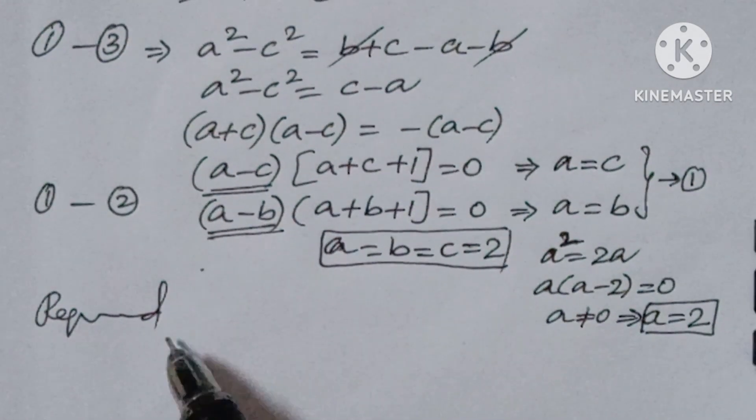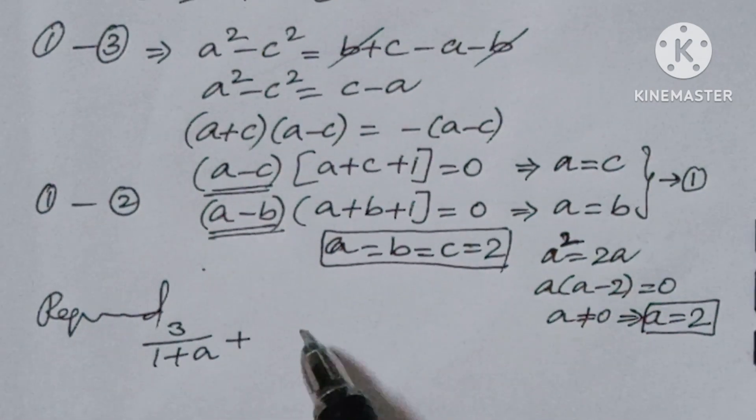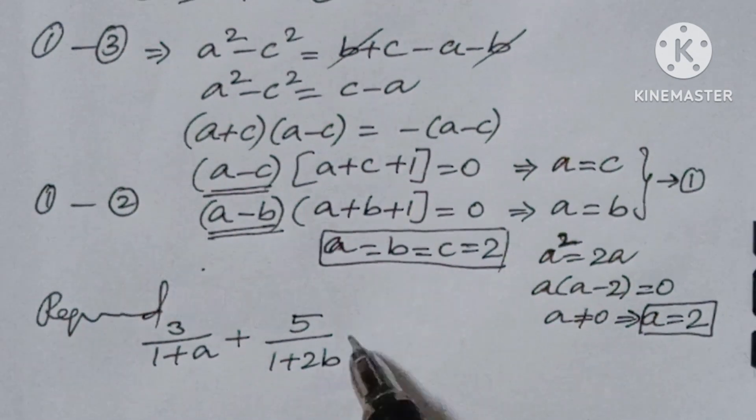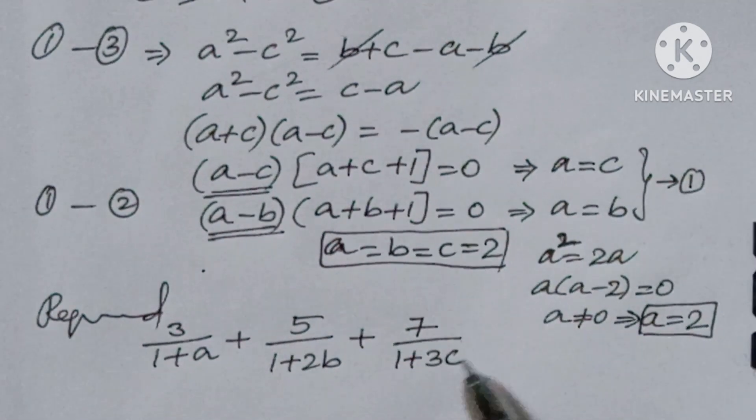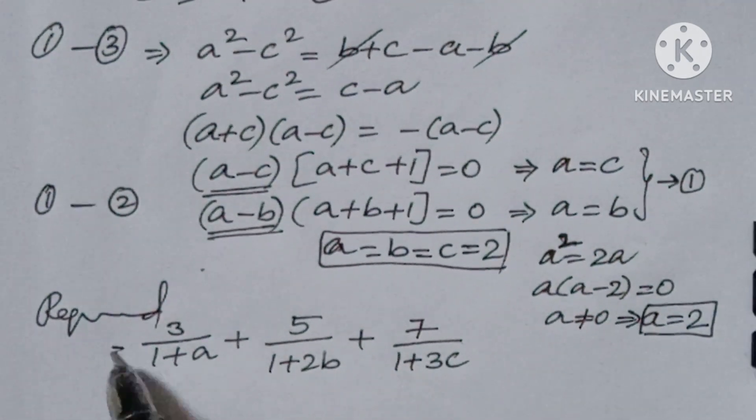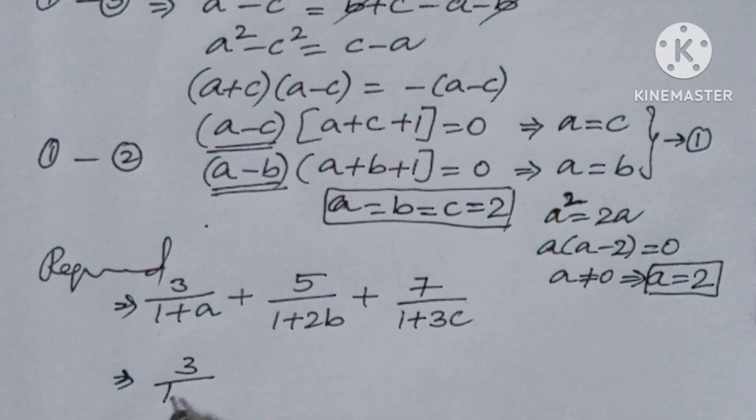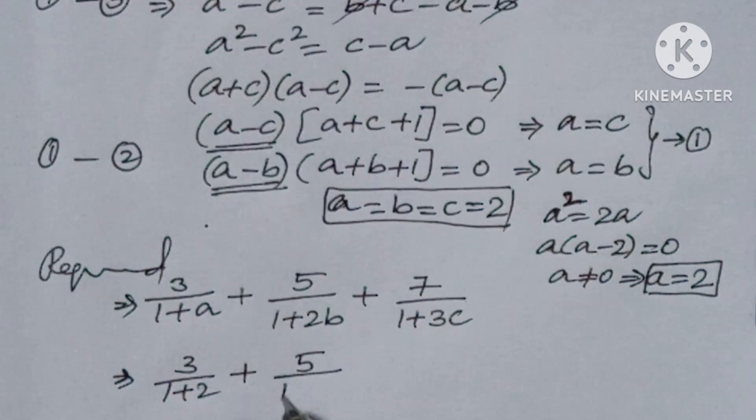Required 3/(1+a) + 5/(1+2b) + 7/(1+3c), you have to find value of this. So here 3/(1+2) + 5/(1+4) + 7/(1+6).